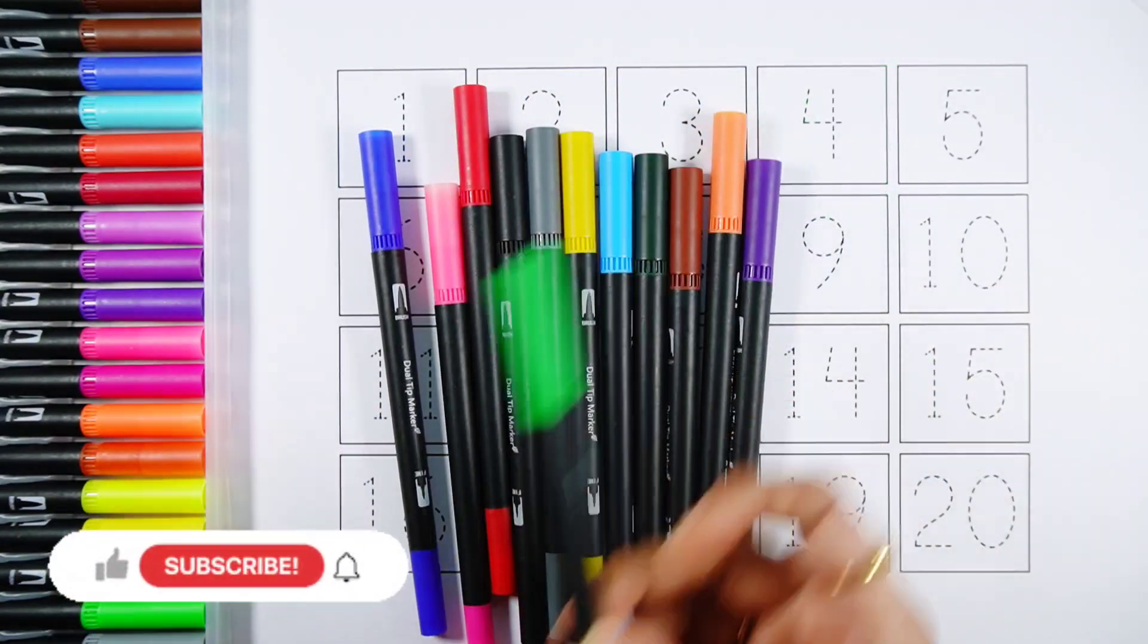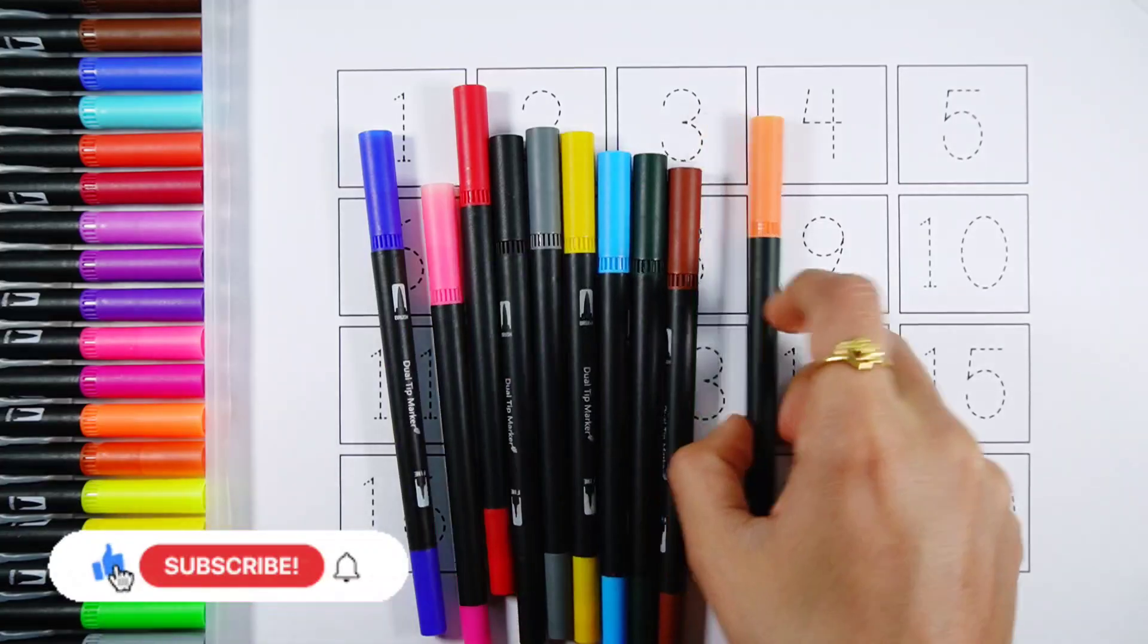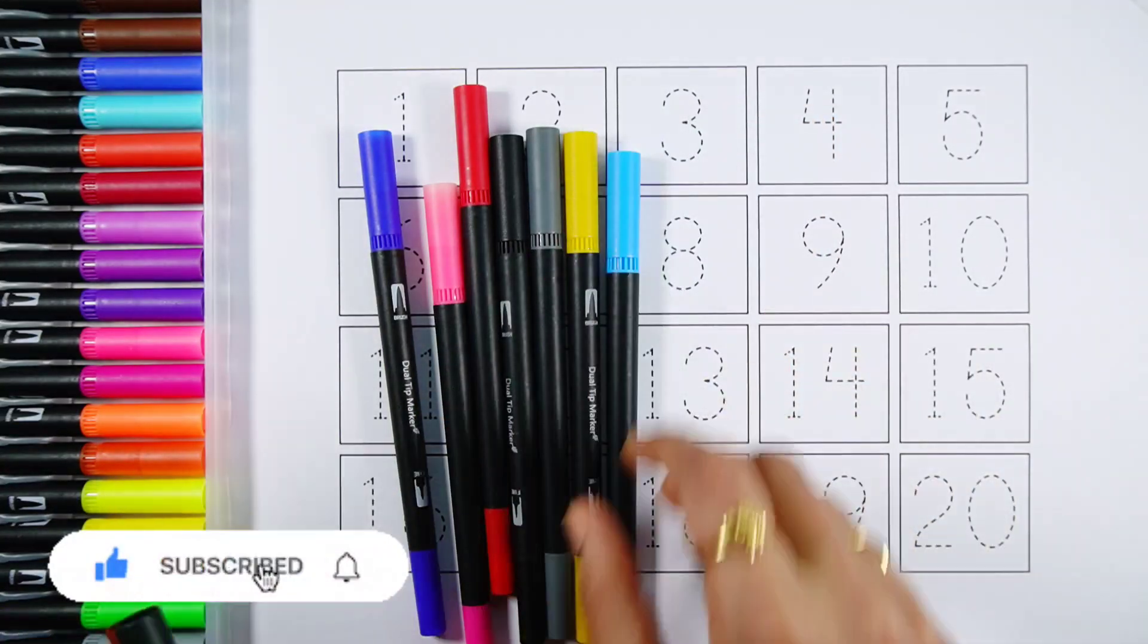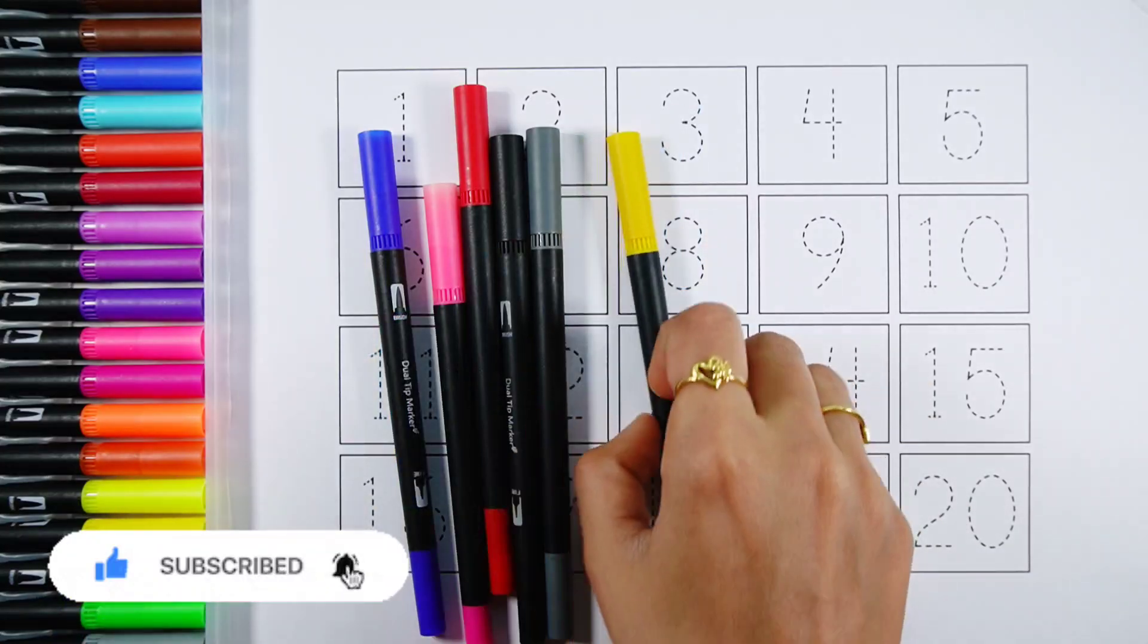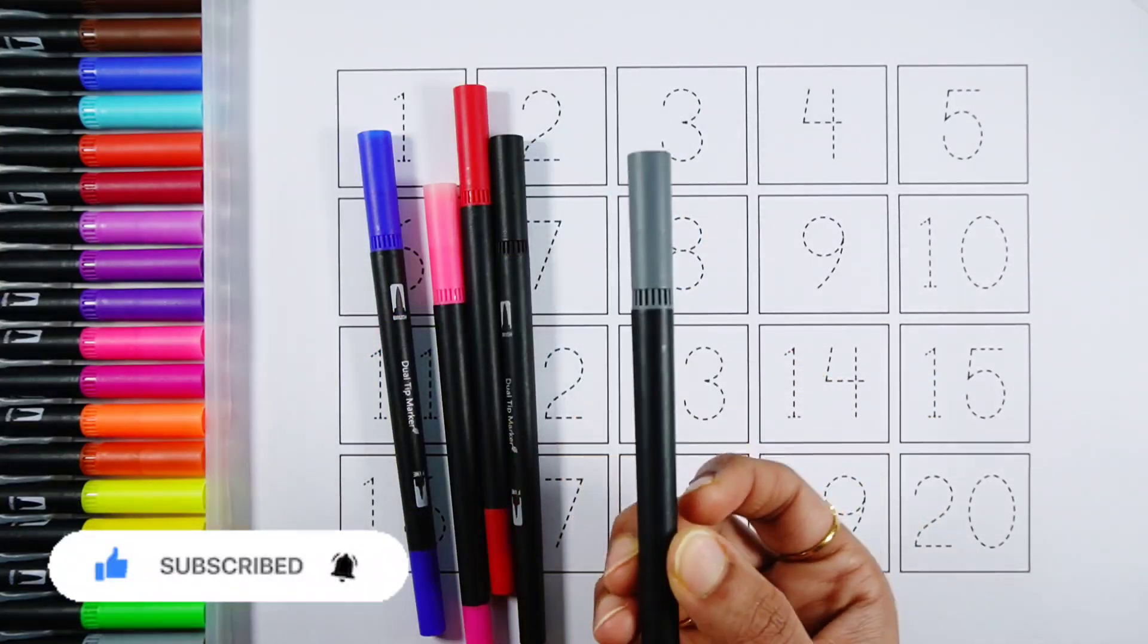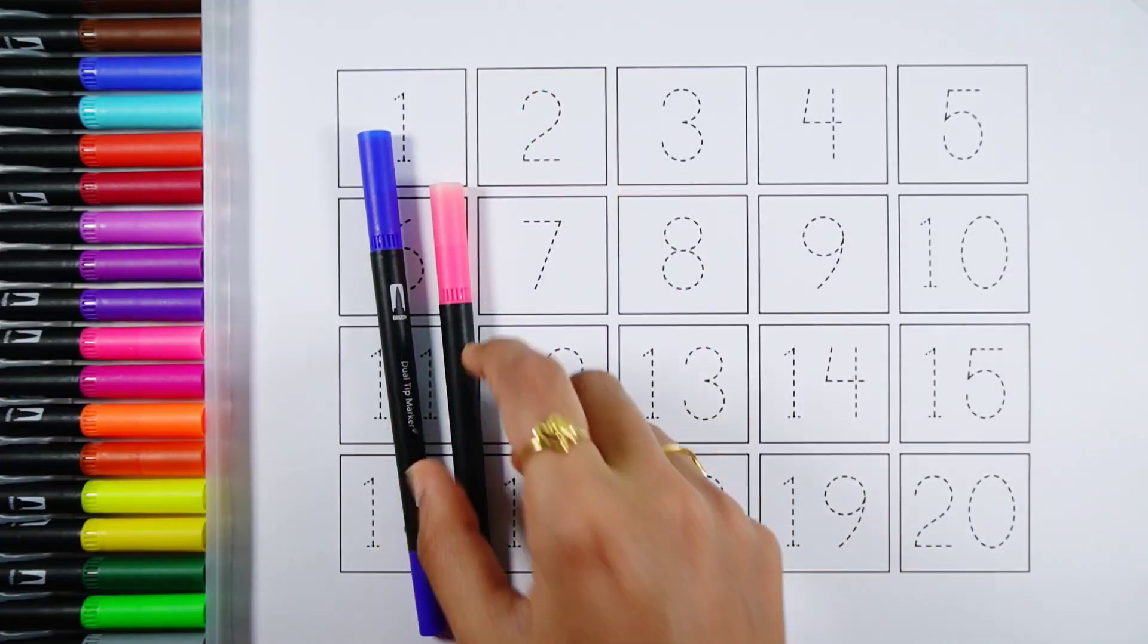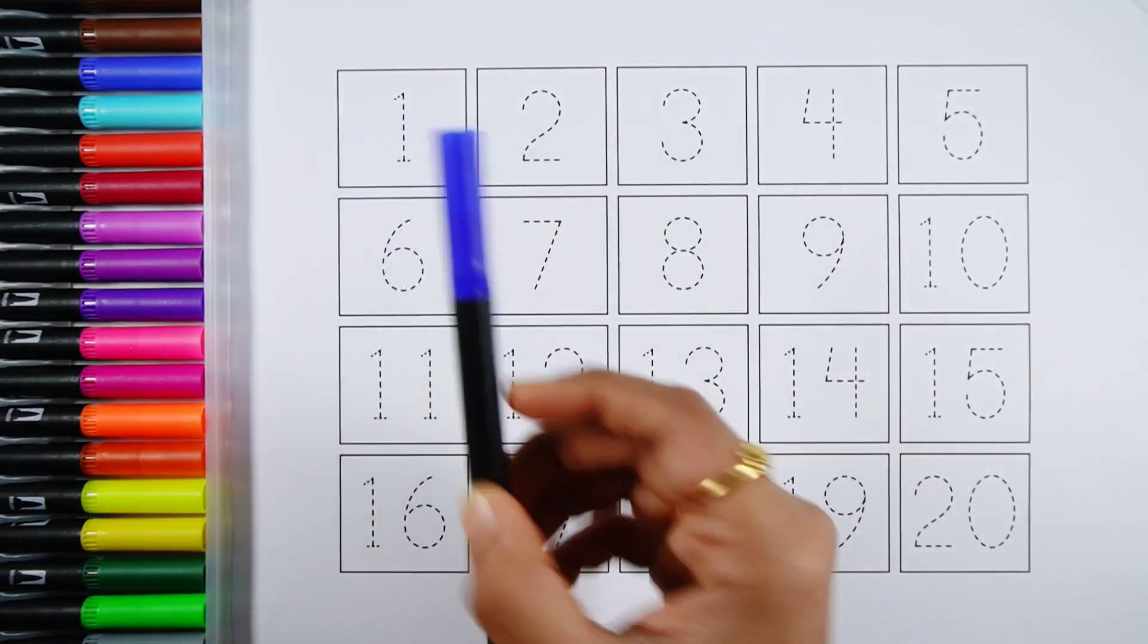Purple color, light green color, violet color, orange color, brown color, dark green color, light blue color, yellow color, gray color, black color, red color, pink color, dark blue color.